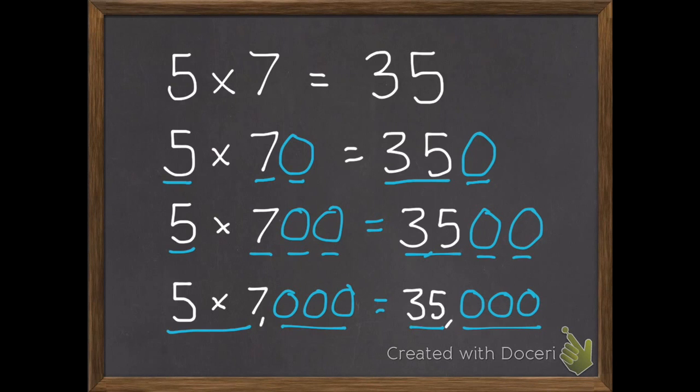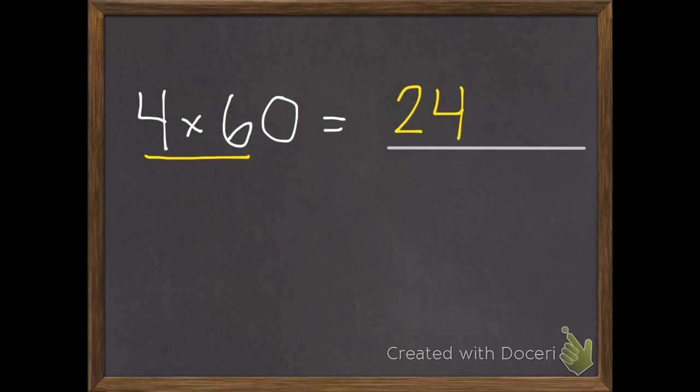Now that we know this pattern, here's a couple example problems that I'll do. So four times sixty. I can use my basic fact of four times six equals twenty-four. I have one zero, so I add one zero.